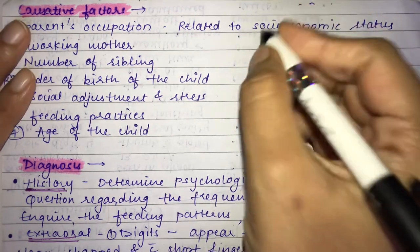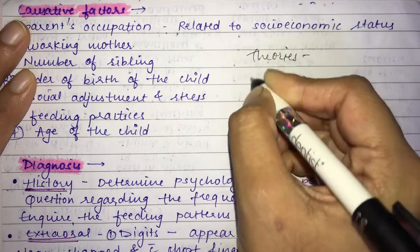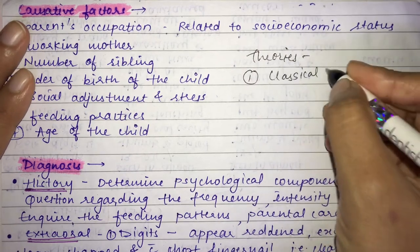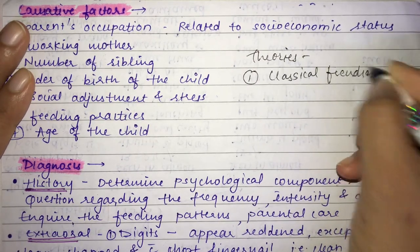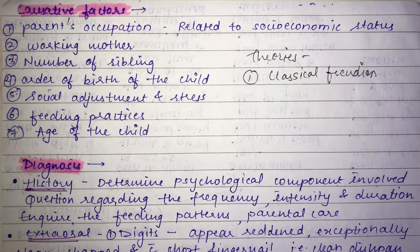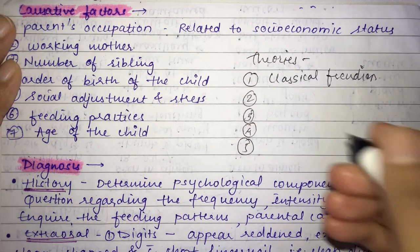Several theories explain thumb sucking. The first is the Classical Freudian Theory, given by Sigmund Freud in 1990, which is a psychoanalytical theory. It proposed that the child goes through various distinct phases of development. In the oral phase, the mouth is considered an erogenous zone, and during this phase the child takes anything and everything to the oral cavity.